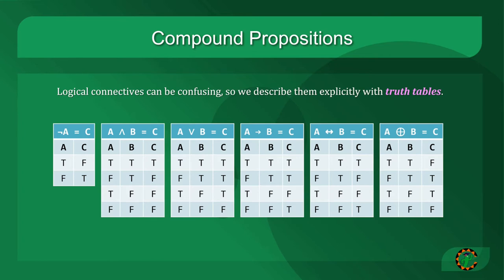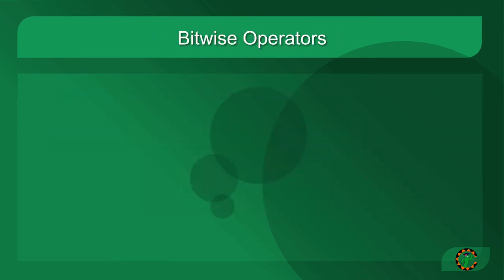Effectively, truth tables help us to lay out the explicit values of a compound proposition with perfect clarity. This is all well and good, but how do we apply it practically?